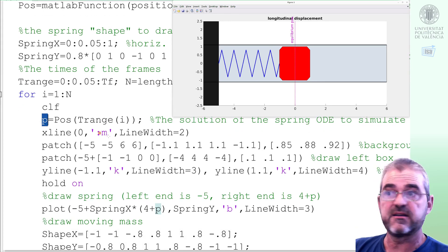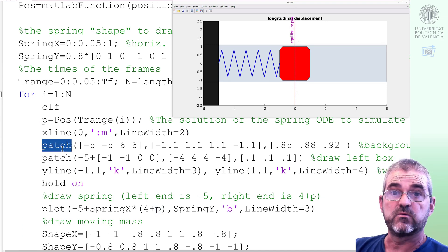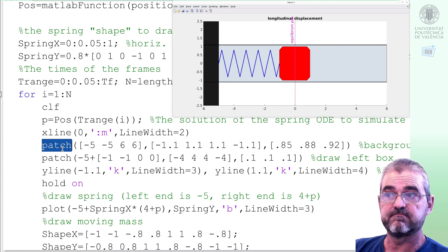This magenta line, here we have it, marks the equilibrium position, 0. The patch command draws a filled polygon. Again, look at the documentation.